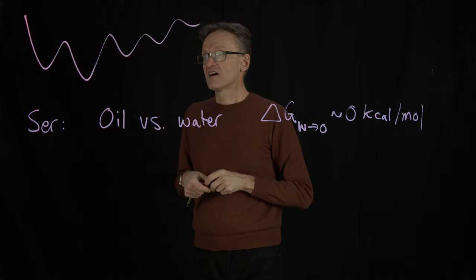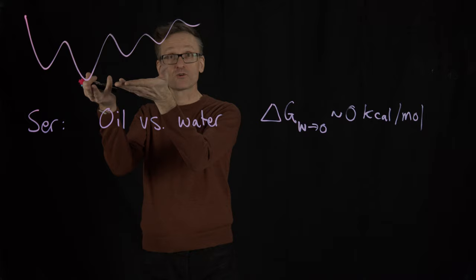And that would kind of correspond - so if this was a landscape where serine actually could move, that would correspond to having two minima that had roughly the same value. It's going to be happy in either. That doesn't really tell us a whole lot.